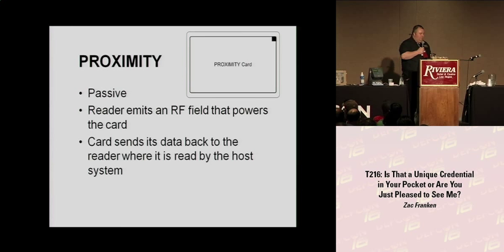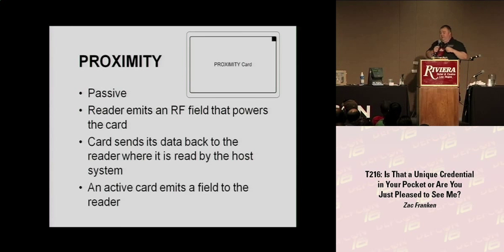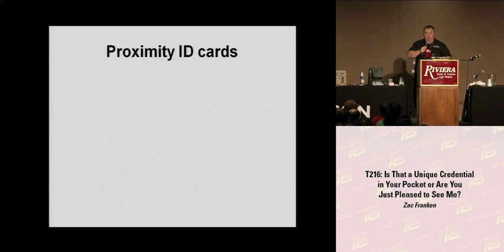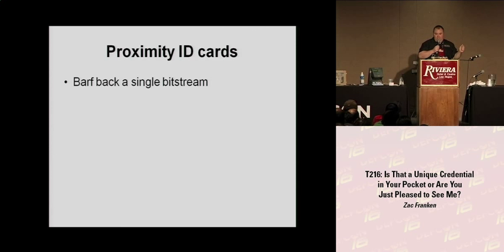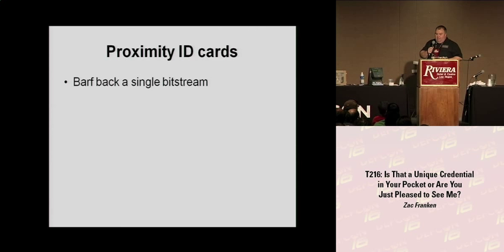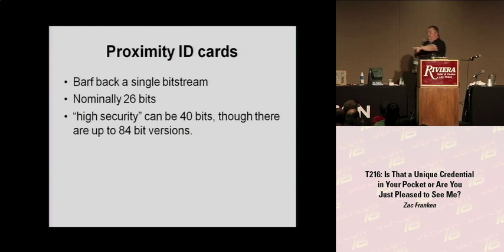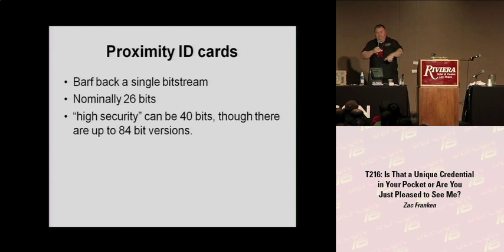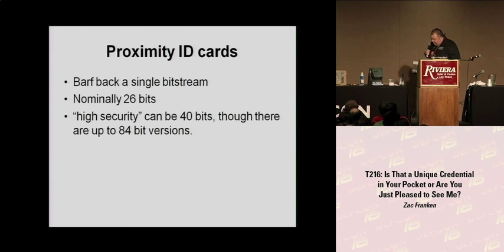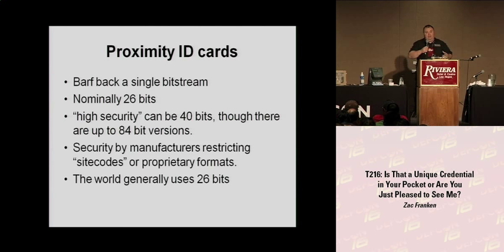There are active cards - typically vehicle transponders - that can be read from a good distance away. When they're energized, they barf back a single bit stream - about 540 bits to get 26 bits across. A lot of systems, including this hand geometry scanner, output 26 bits. So 26 bits in the access control industry is very much seen as a standard. Manufacturers will sell you your own site codes or proprietary formats if you want - that's just an extra layer of security.